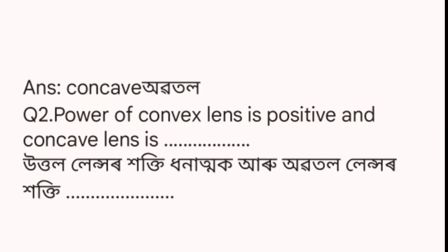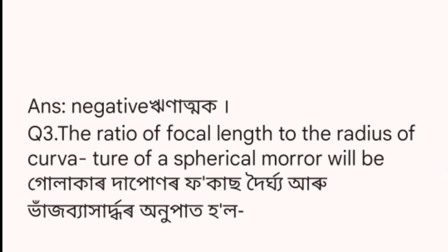Number two: the power of a convex lens is positive and the power of a concave lens is dash. What is the answer? The answer is negative.